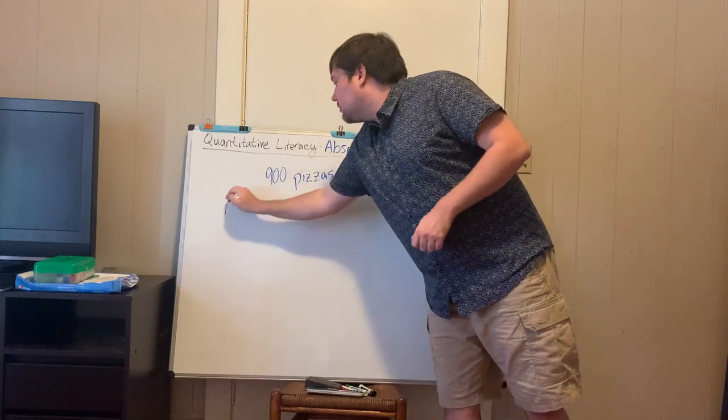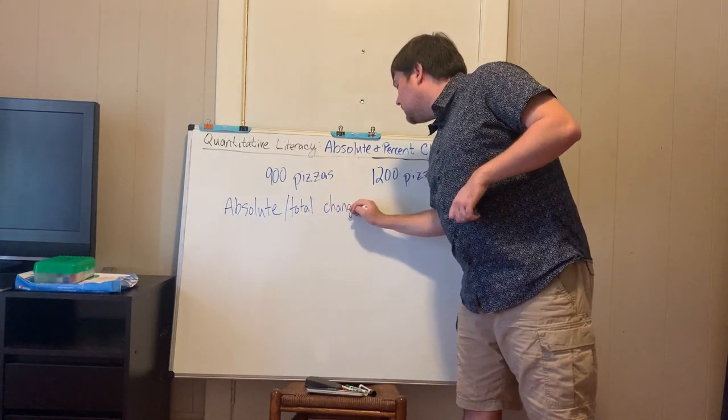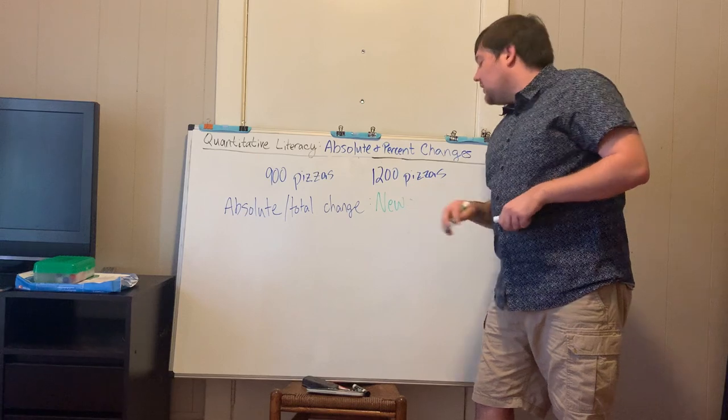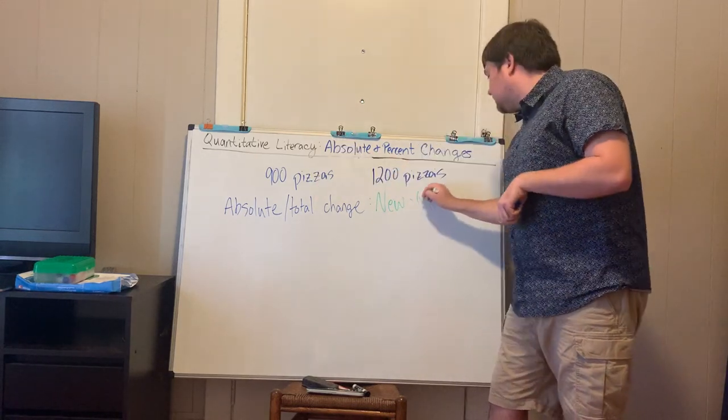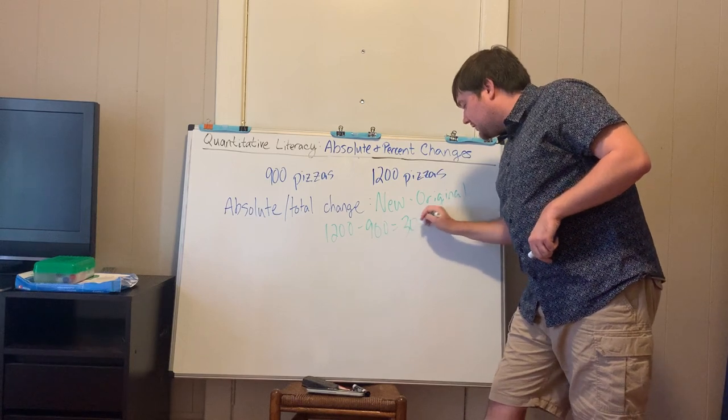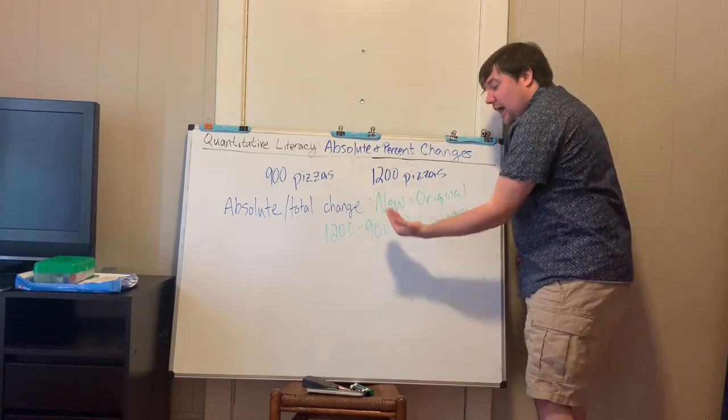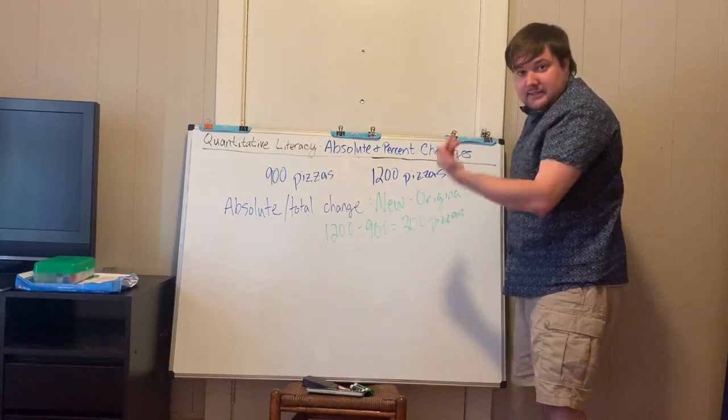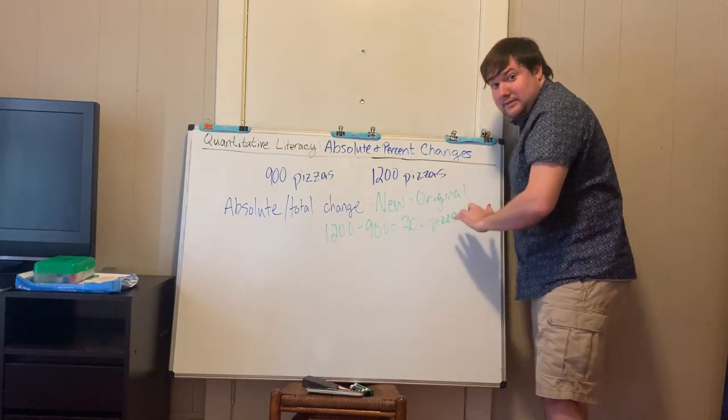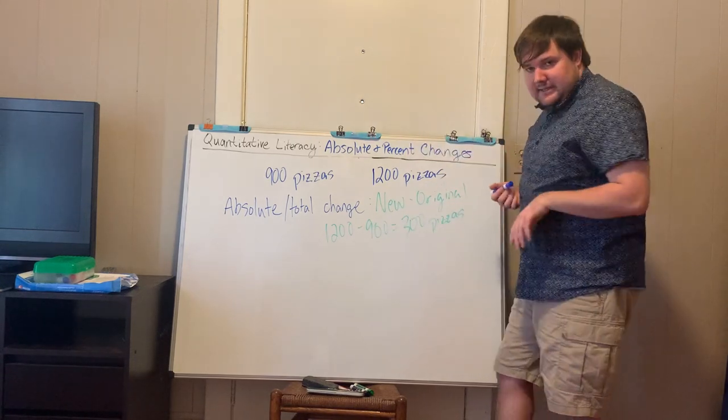Absolute change or total change is going to be the one that is probably the most obvious to you. All you do is you just take your new amount and you subtract your original amount. So in this case, you have 1200 minus 900, which gives you 300 pizzas. Biggest thing to watch out for with this one is always do new minus original, new minus old.